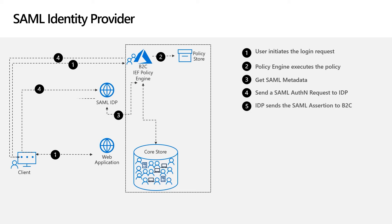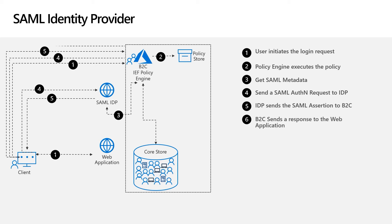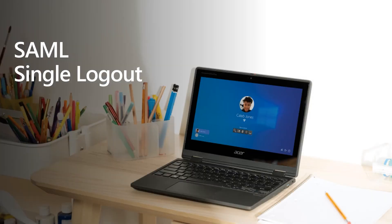B2C then sends a SAML authN request to the identity provider via the client's browser. On successful authentication, the external identity provider sends back to B2C a SAML assertion. B2C will then retrieve the claims from the assertion and generate a response back to the web application. Now we have successfully logged into B2C.